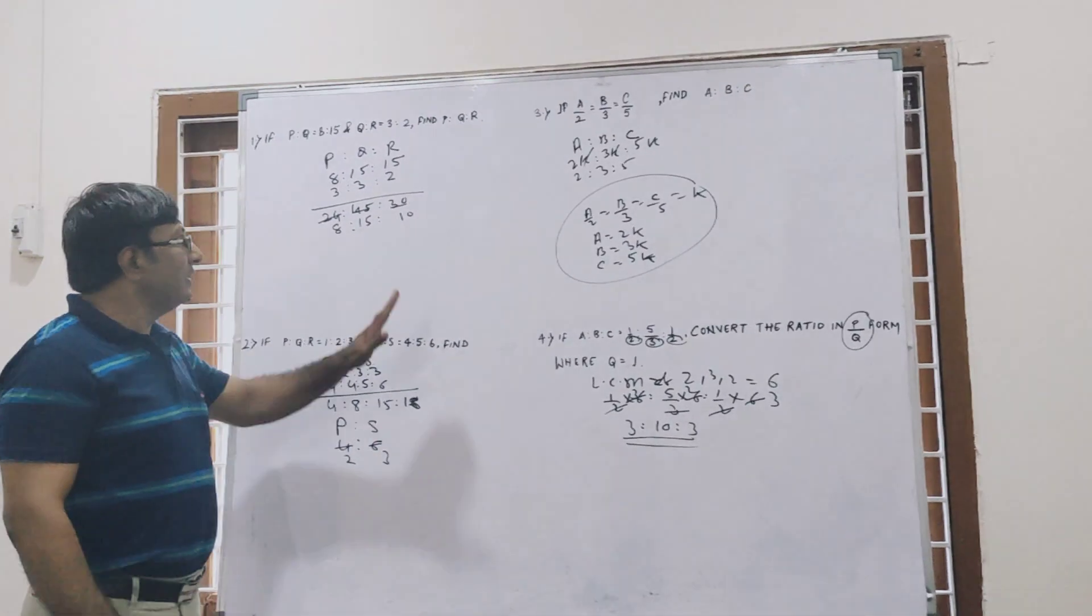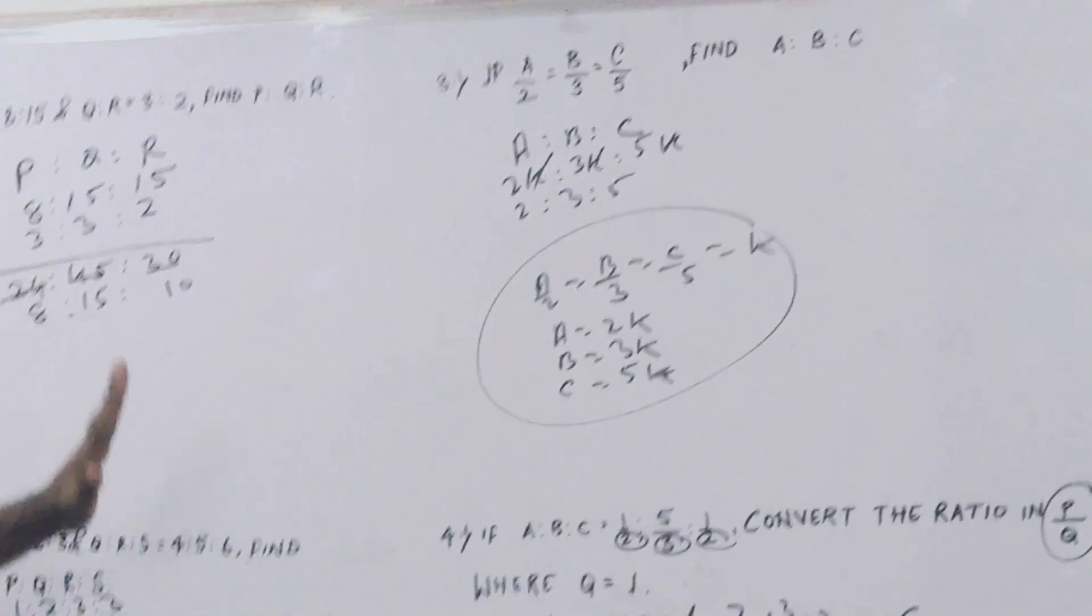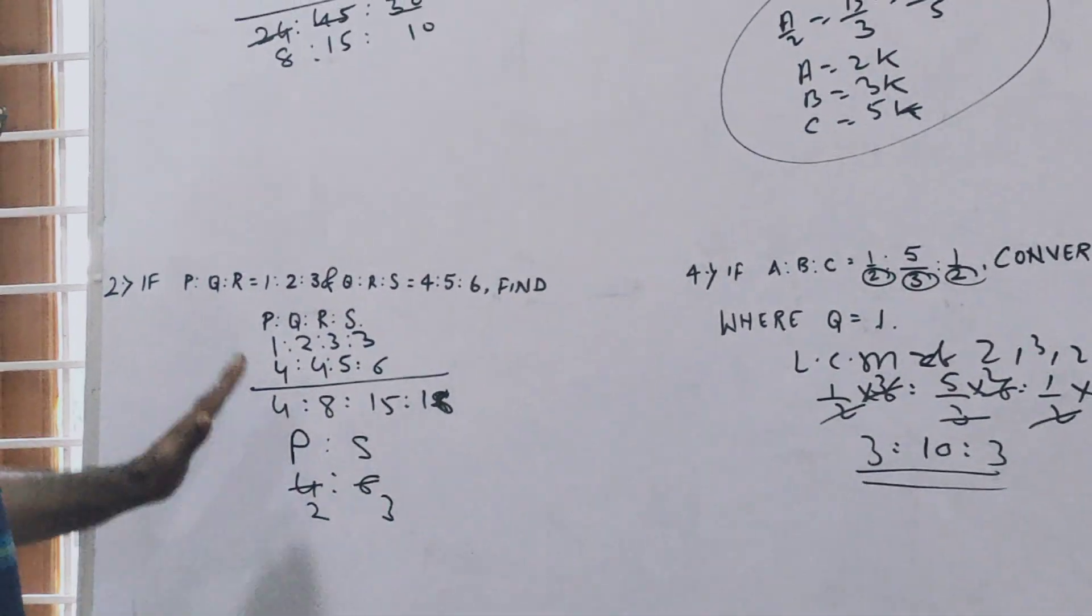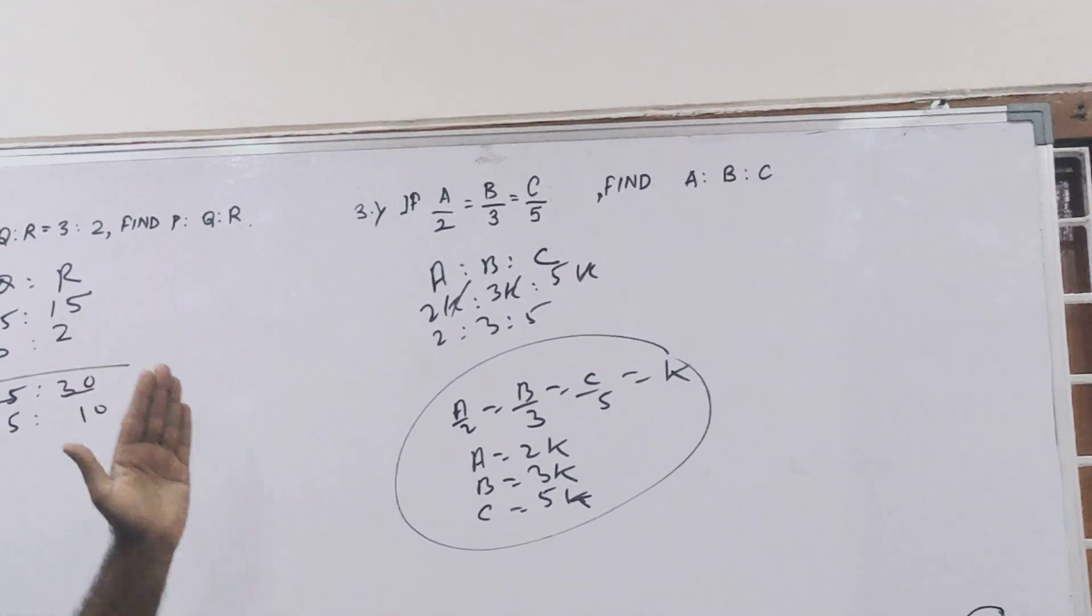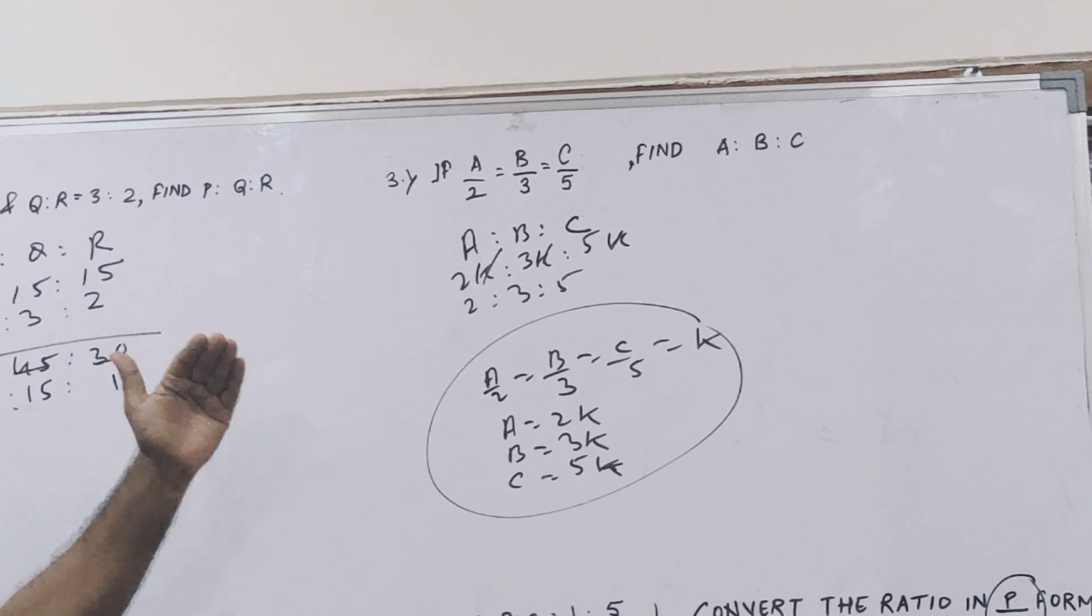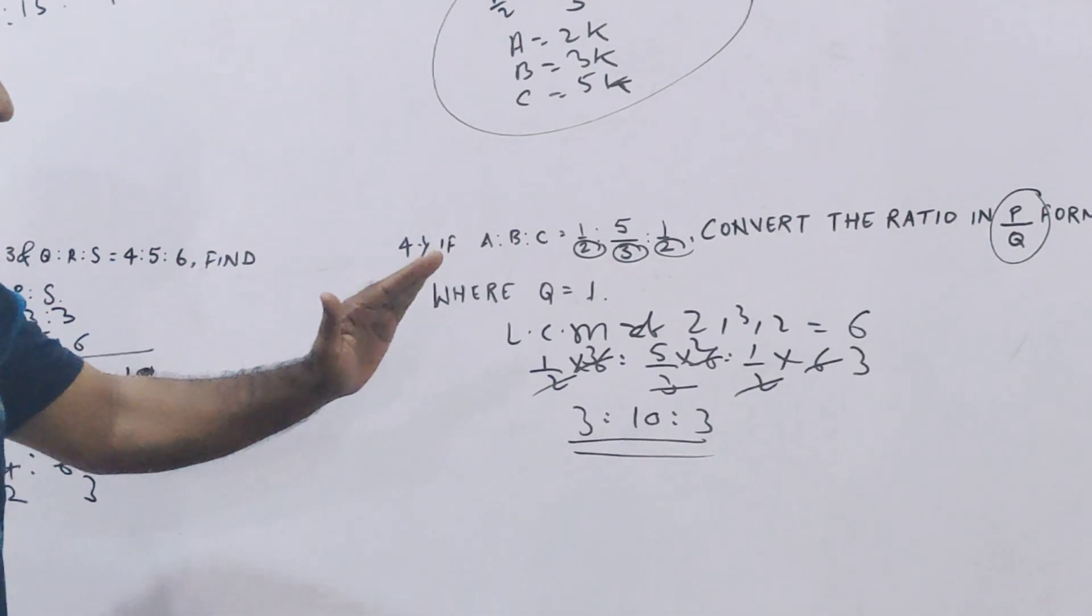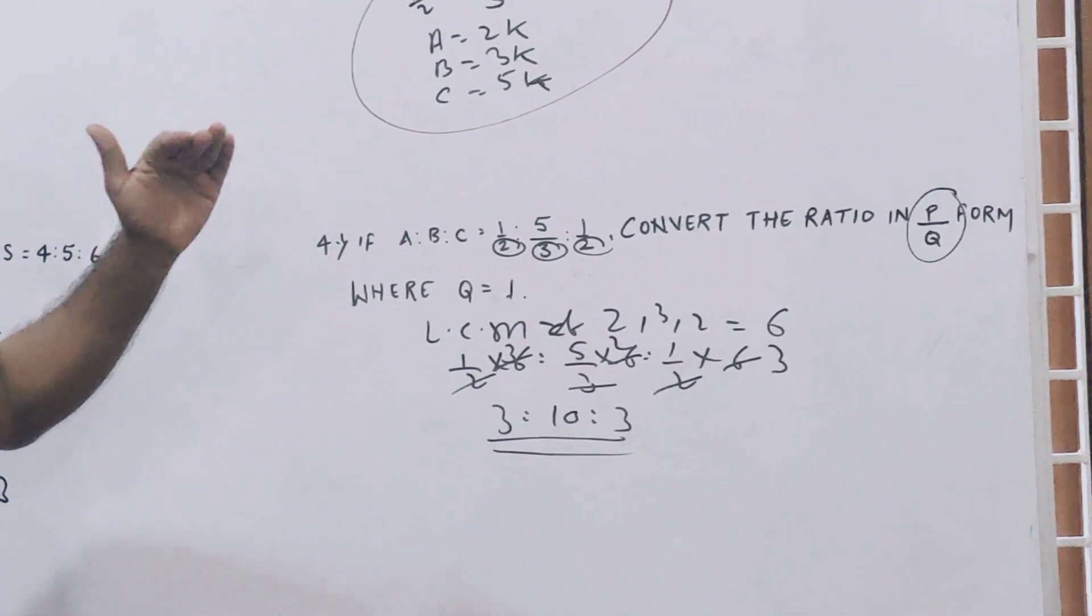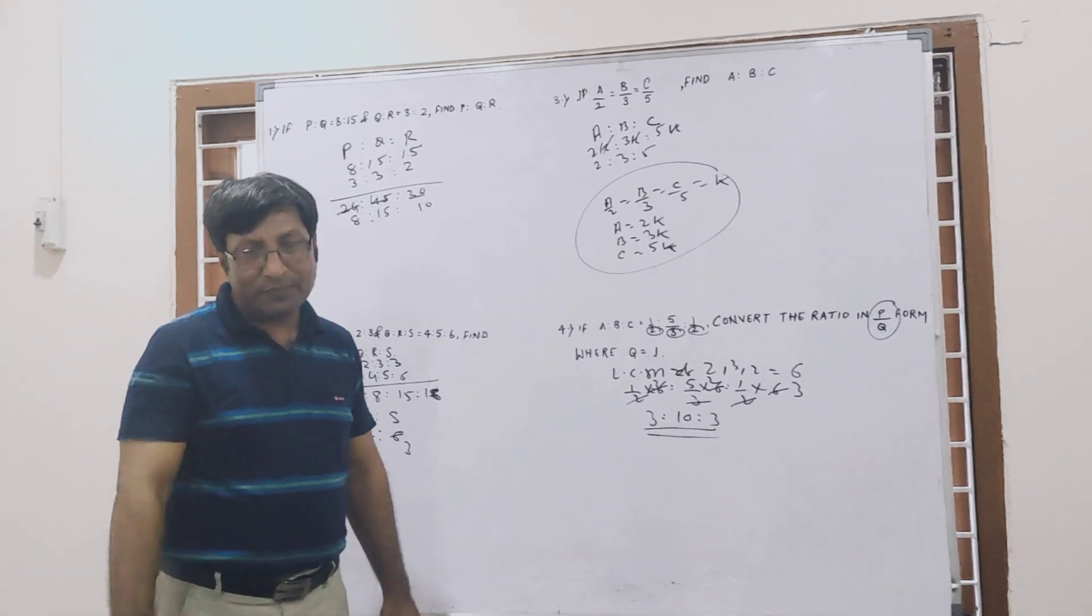In this way you have seen these four questions. These are tricky and basic also. The first was 2 ratios, second one was 3 ratios, third one was if the numbers are equal in the fractions, and fourth one was fractions converted in a simple way. So I think you have understood well. Thank you.